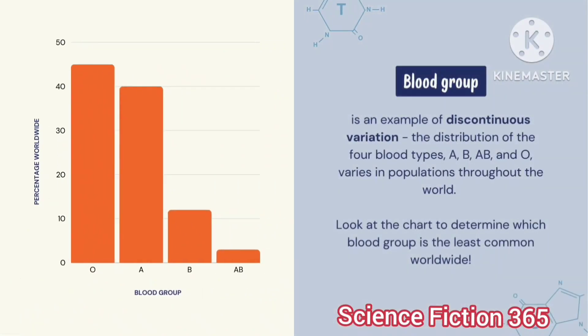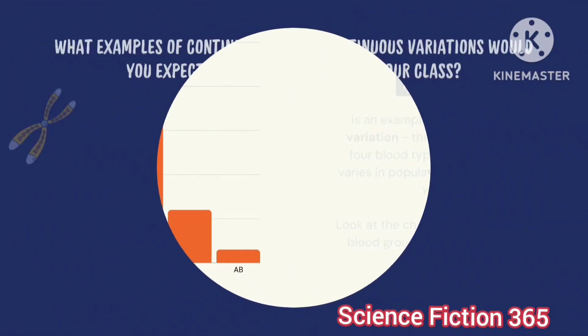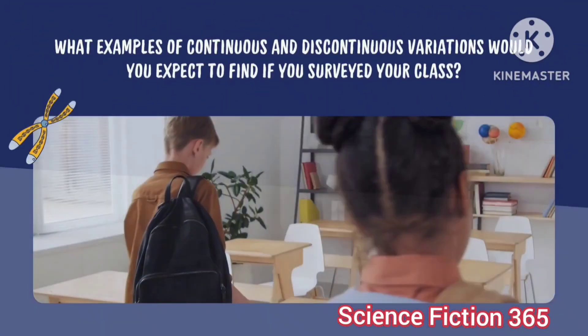Blood group is an example of discontinuous variation. There are four blood types: A, B, AB, and O, which vary in population throughout the world. Look at the chart to determine which blood group is the least common worldwide.